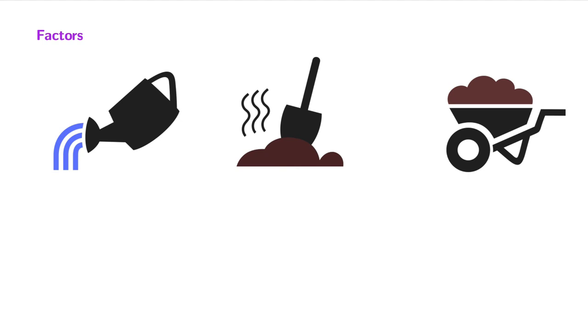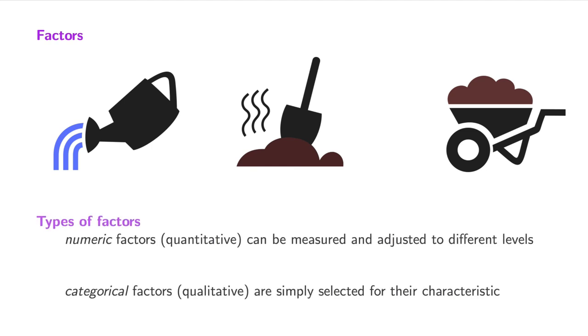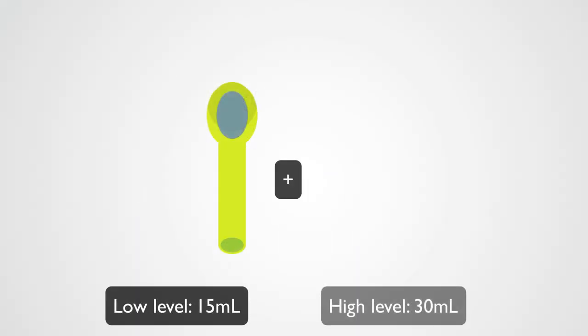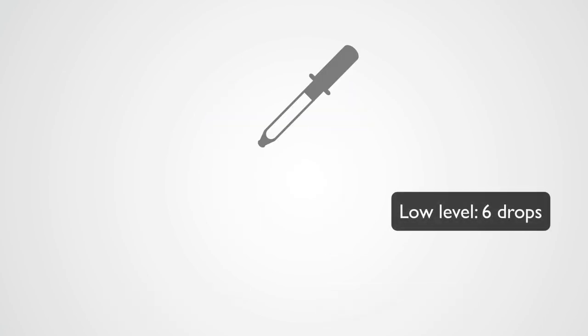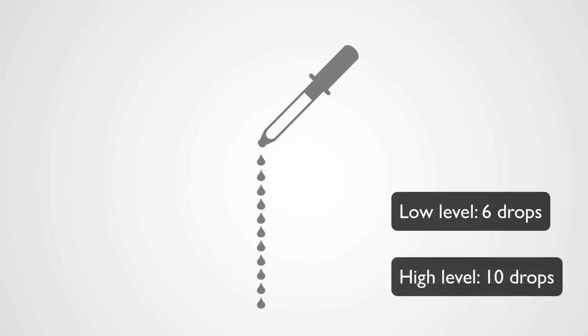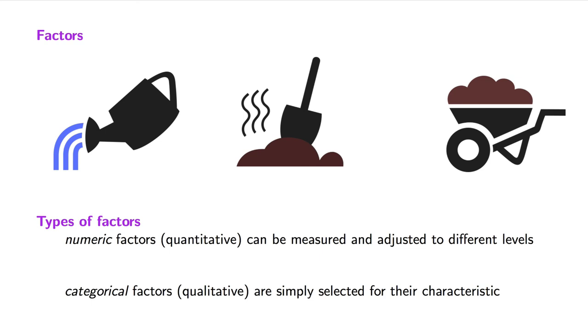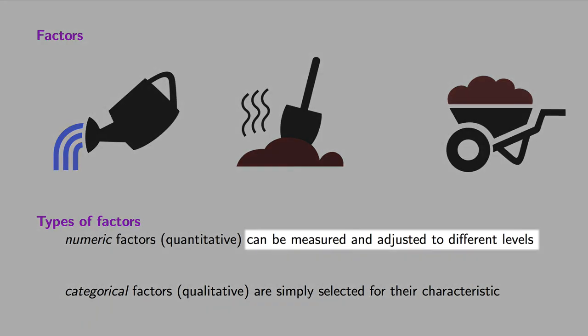Next, I'd like to discuss a bit more about the factors. We can distinguish between two main types of factors: numeric factors and categorical factors. Numeric factors are referred to as quantitative, since they can be measured as a numeric quantity. Let's go back to the plants example. We may decide to use 15 ml of water or 30 ml of water. We could use 6 drops of fertilizer or 10 drops of fertilizer. In these examples, we can numerically measure the factor.